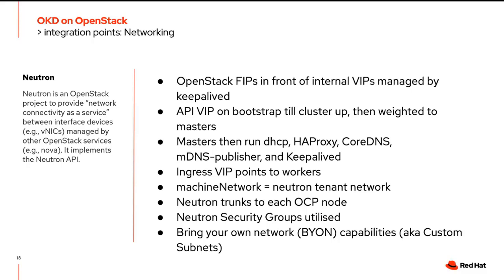As a tenant on OpenStack you can use the same internal IP addressing across multiple clusters — what distinguishes them is the NAT'd floating IP address assigned to each. Each cluster needs its own unique floating IPs and DNS names registered, but the internal addressing can be the same. In enterprises, we typically see multiple clusters: dev, pre-prod, and production, or even per development team, each as their own tenant.